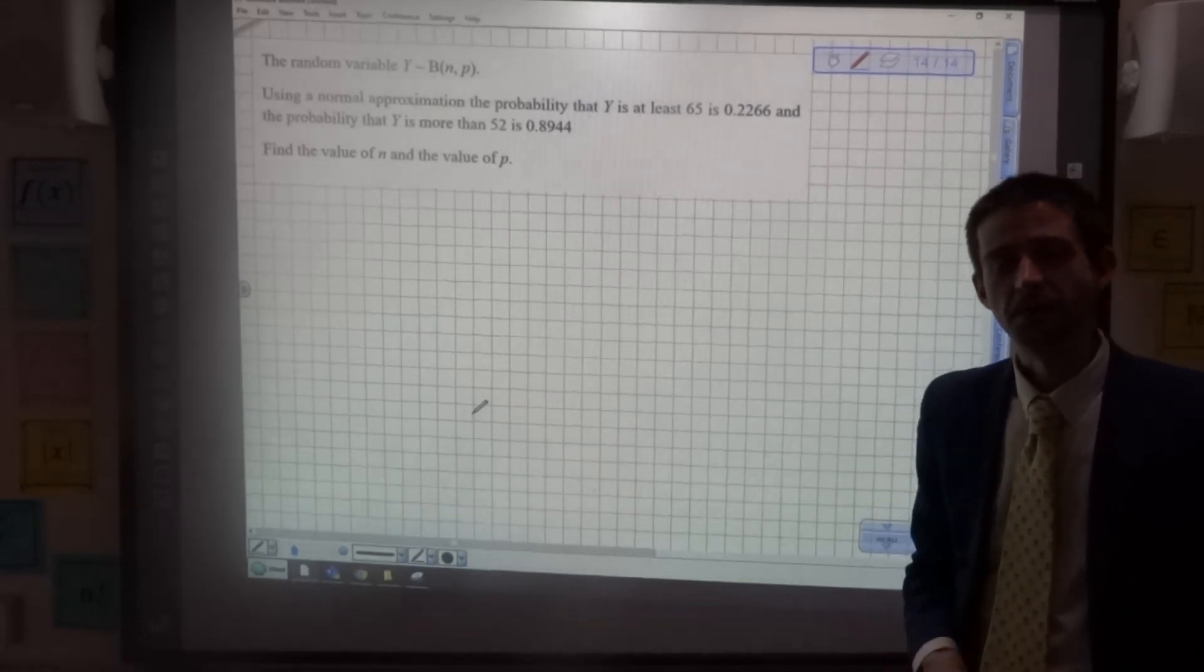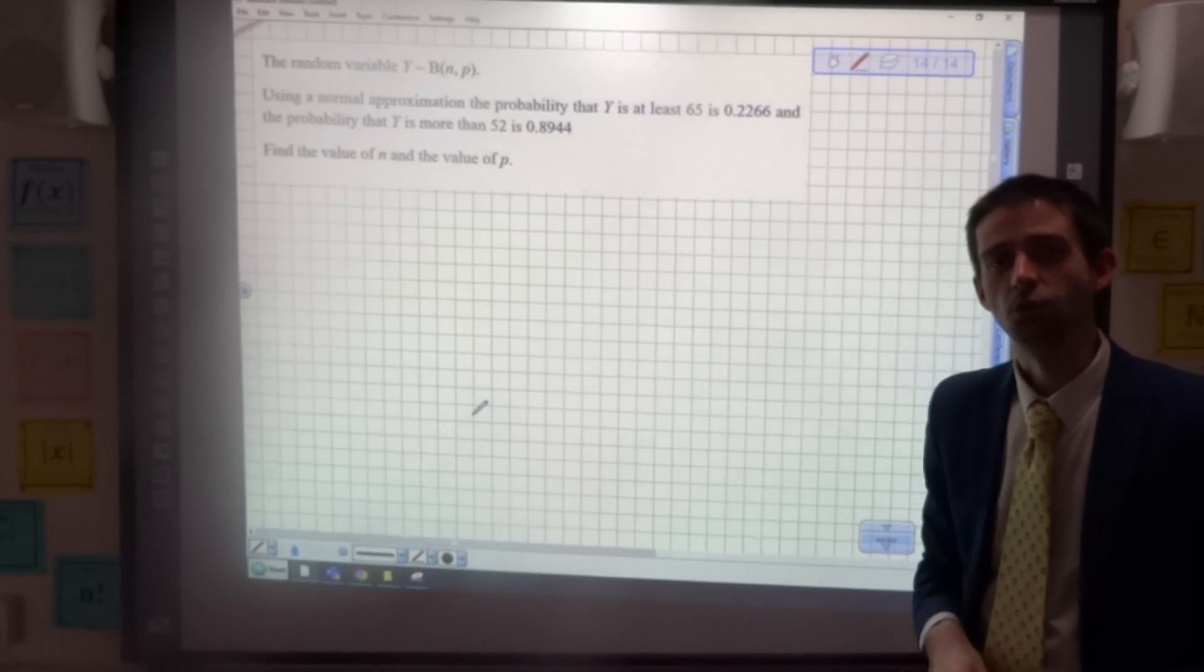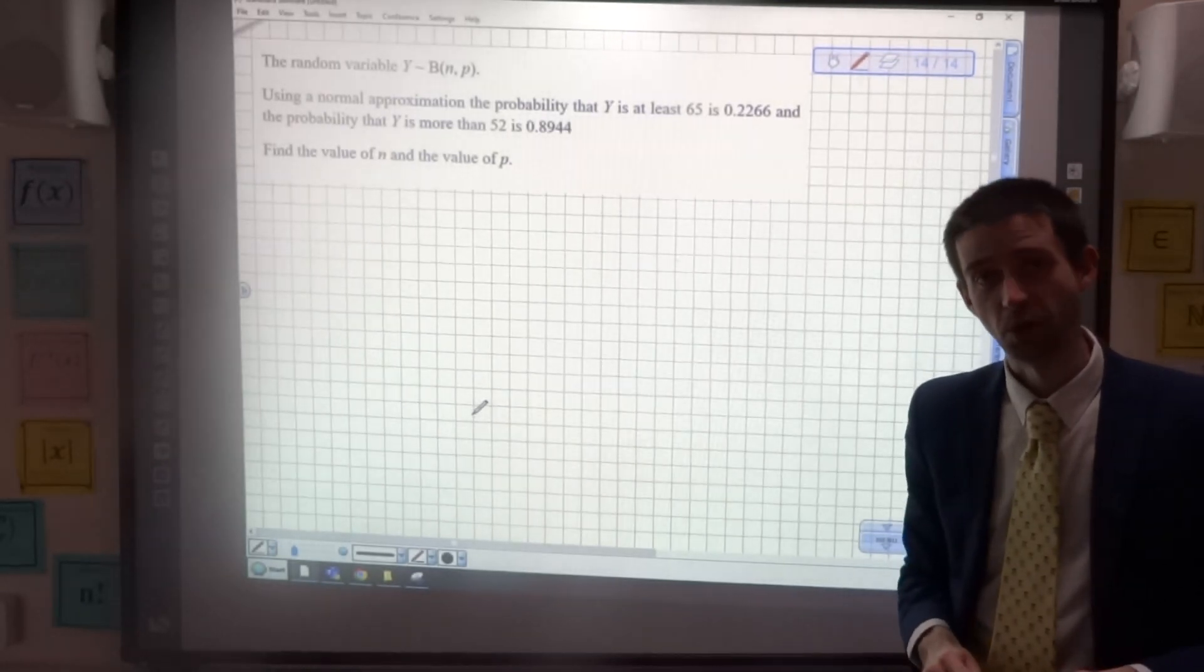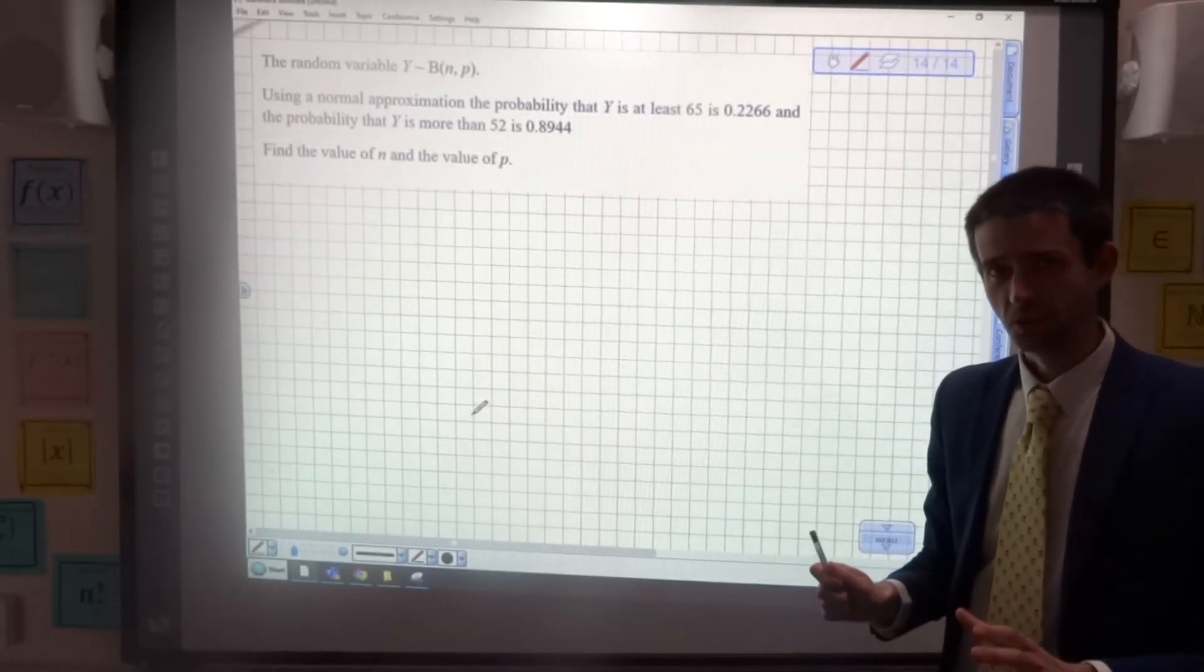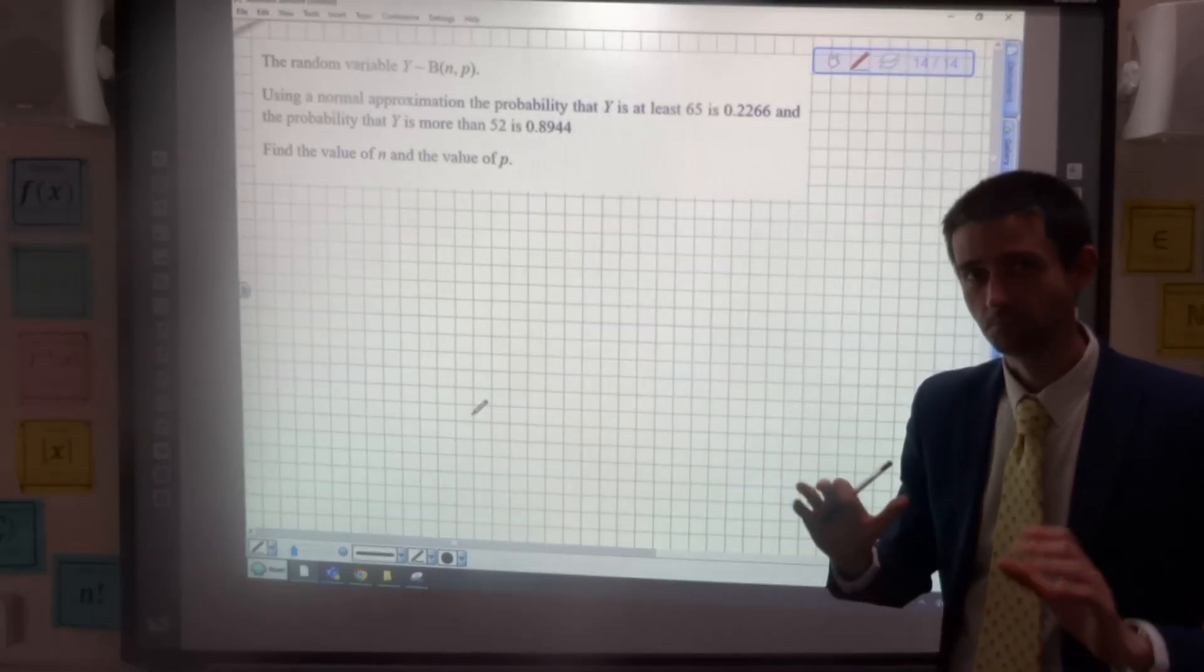Welcome back to Matheson in an Empty Classroom with me, Mr. Sullivan. This is part two of the video on using a normal distribution to approximate a binomial distribution. This example is proper gangster, so bear with me. It's going to take a bit of time, but it's going to be okay.